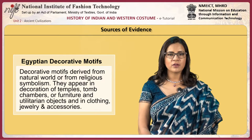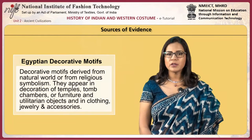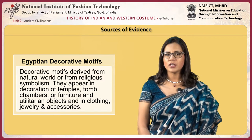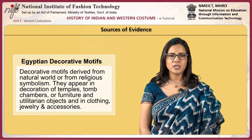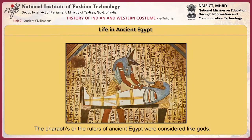Decorative motifs derived from the natural world or from religious symbolism appear in the decoration of temples, tomb chambers, furniture, utilitarian objects, and in clothing, jewelry and accessories. By 3200 BCE, the distinct cultures of upper and lower kingdom had amalgamated to form one kingdom, often depicted by the pharaoh's headgear of the double crown.